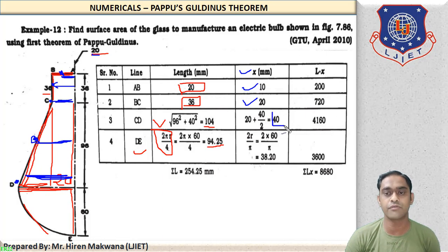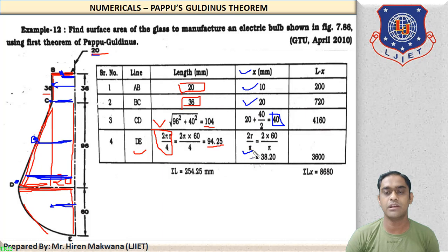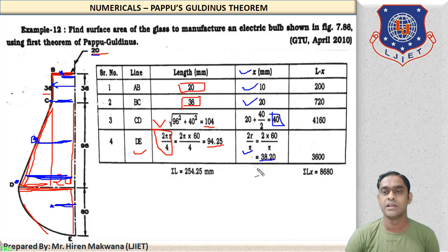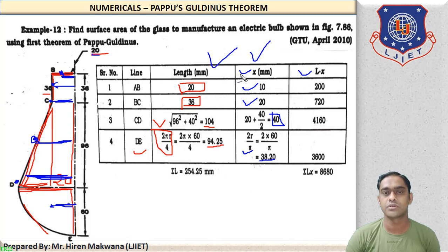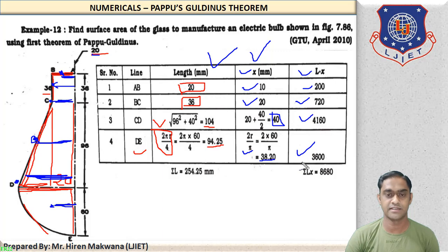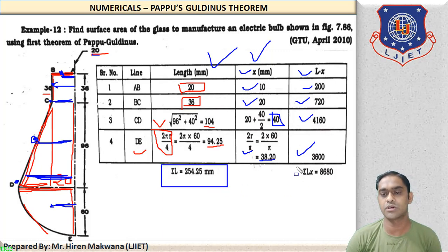For the quarter circular arc DE, using the Pappus formula, CG = 2R/π. Substituting R = 60: X₄ = 38.20 mm. The last column is the multiplication L × X: L₁X₁ = 200, L₂X₂ = 720, L₃X₃ = 460, L₄X₄ = 3600. The summation of all lengths and ΣLX are now available.